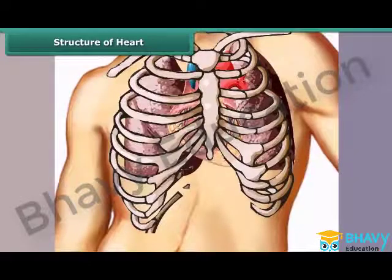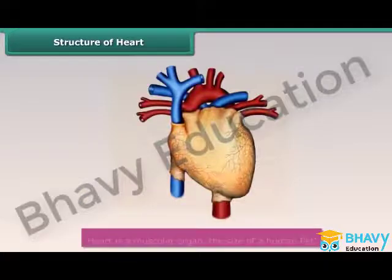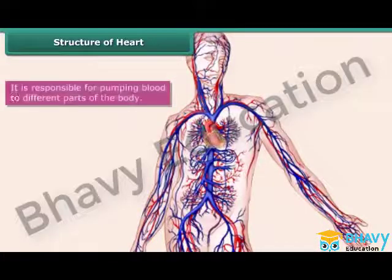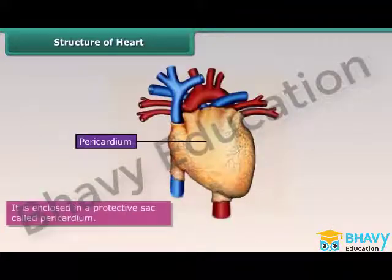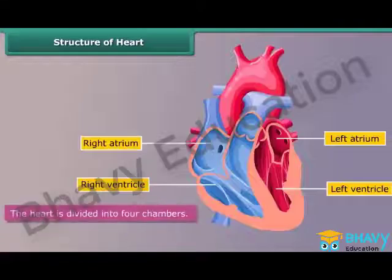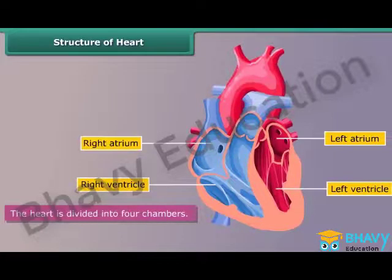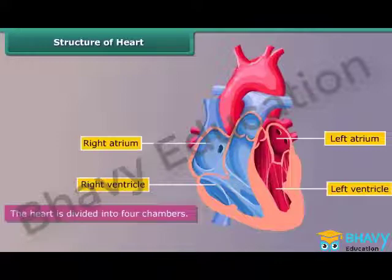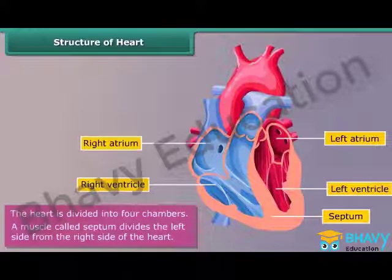The heart is a muscular organ located slightly to the left of the middle in the chest cavity. It is the size of a human fist and is responsible for pumping blood to different parts of the body. It is enclosed in a protective sac called the pericardium. The heart is divided into four chambers: the left atrium and right atrium at the top, and the left ventricle and right ventricle at the bottom. The muscle called the septum divides the left side from the right side.